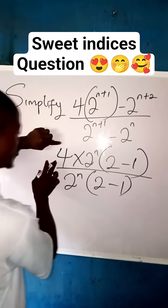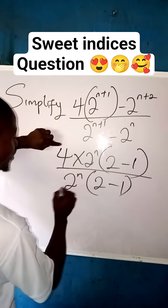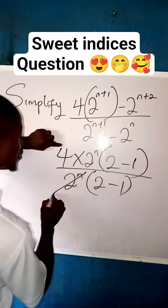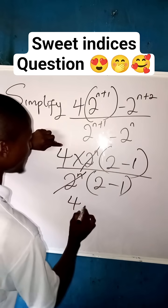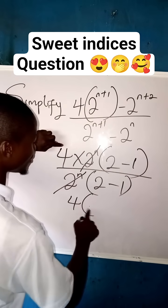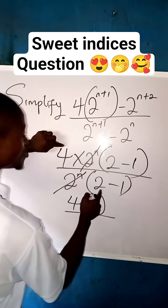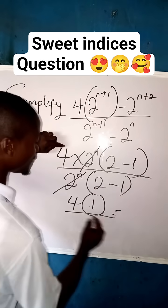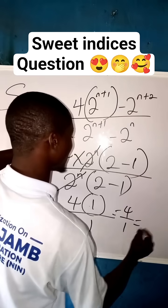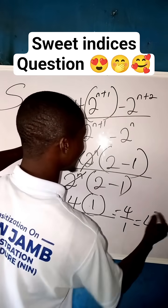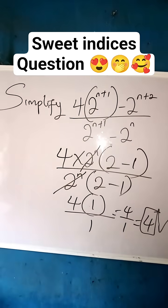Now what we have left is: 4 times open bracket 2 minus 1, which is 1, all over 2 minus 1, which is 1. So we have 4 times 1 is 4, all over 1, which is equal to 4 over 1 is 4. This is our final answer.